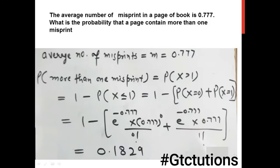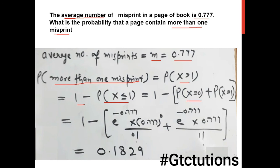Example 2: The average number of misprints in a page of a book is 0.77, so m = 0.77. Find the probability that a page contains more than one misprint: P(X > 1) = 1 − [P(X = 0) + P(X = 1)]. After solving, the answer is 0.1829.